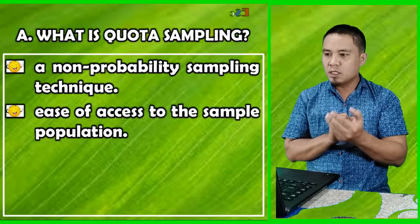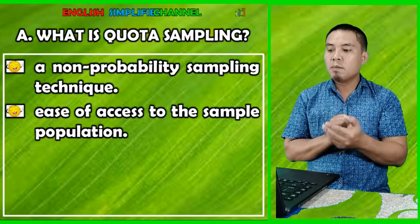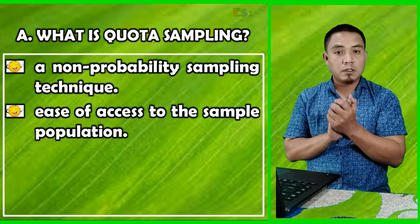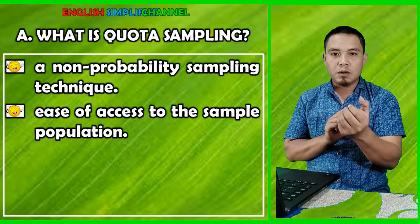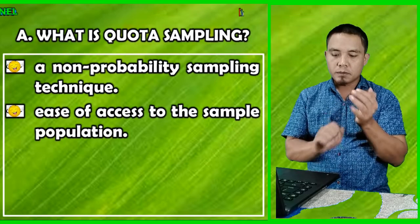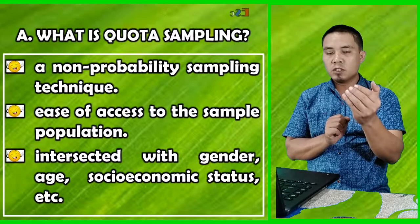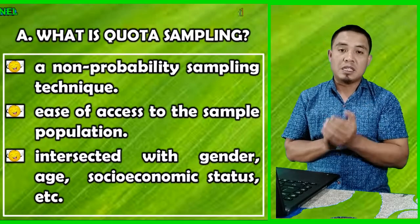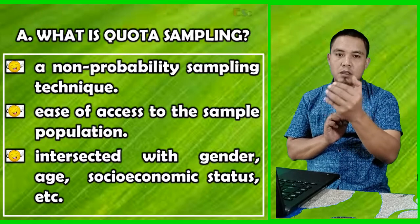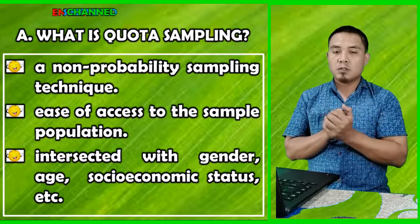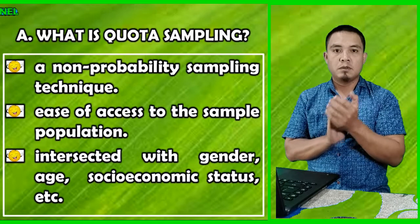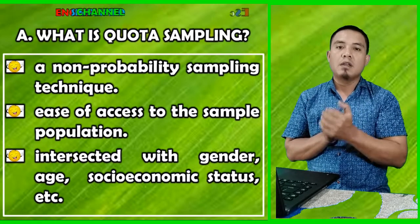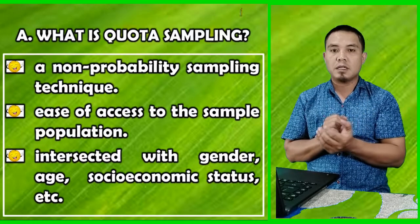Quota sampling means it is an ease of access to the sample population — you as the researcher choose the easiest, simplest way to obtain data from the sample. Quota sampling is intersected with gender, age, socioeconomic status, etc. In relation to our research question, students can be divided by gender (female or male), by age, and also by levels — first, second, and third grade.